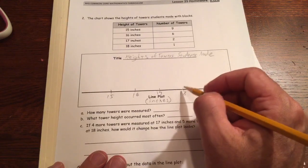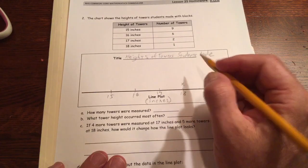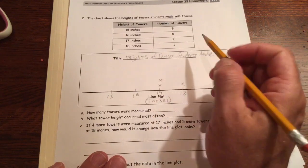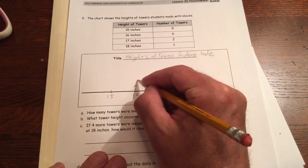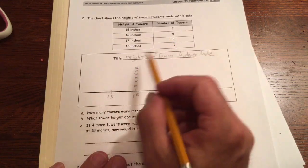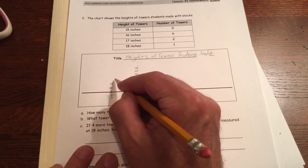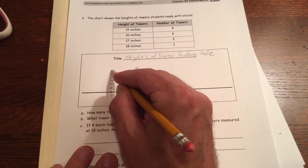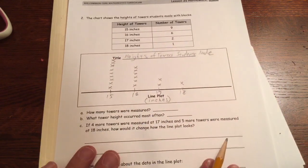So let's see, with 18, we're going to go a little bit backwards here. 18, that's one. 17 has two towers. 16 inches, there's six of those: one, two, three, four, five, six. And for 15, there's nine of those: one, two, three, four, five, six, seven, eight, nine.